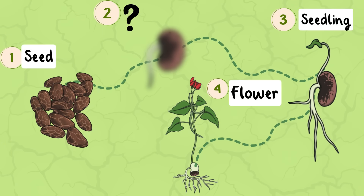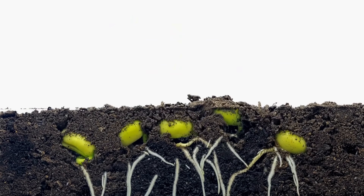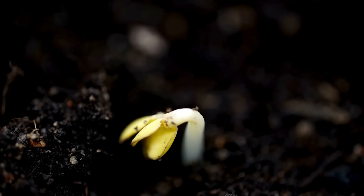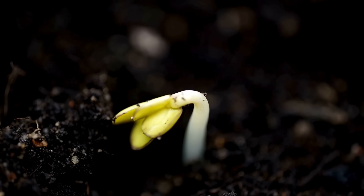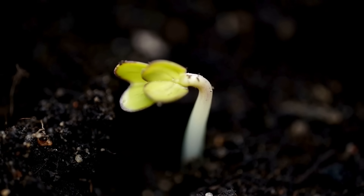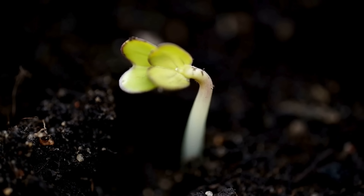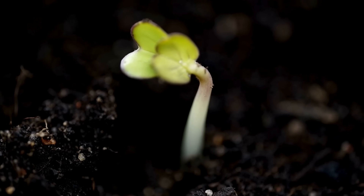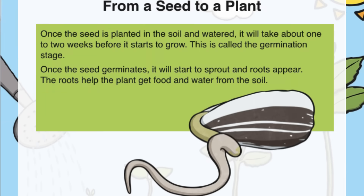Now let's look at the second life stage of a plant. Do you remember what it is? That's right, it's a sprouting seed! From a seed to a plant: once the seed is planted in the soil and watered, it will take about one to two weeks before it starts to grow. This is called the germination stage. Once the seed germinates, it will start to sprout and roots appear. The roots help the plant get food and water from the soil.